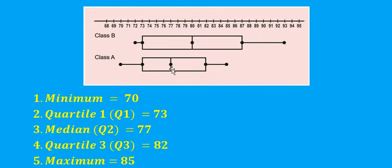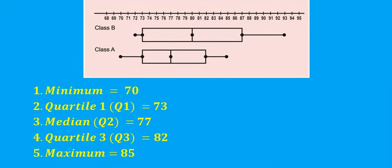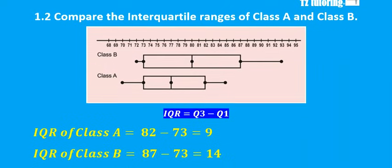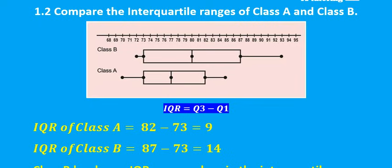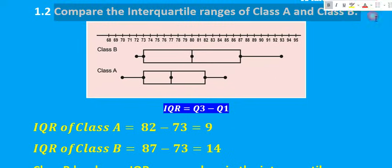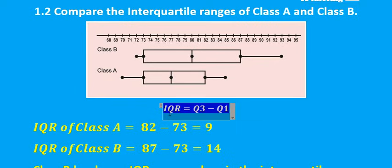You could have done the same for class B, but this question was only asking for the five-number summary of class A. Moving on to question 1.2, the second part wants the learner to compare the interquartile ranges of both classes — class A and class B. As you will remember from part one, the interquartile range is calculated by taking Q3 and subtracting Q1.